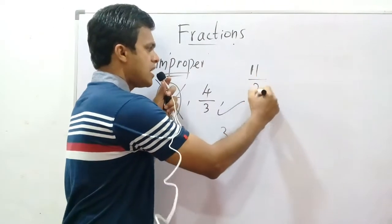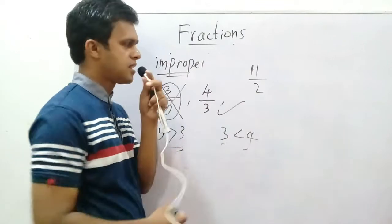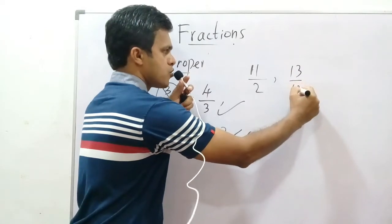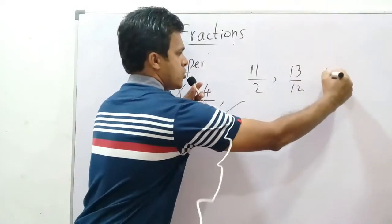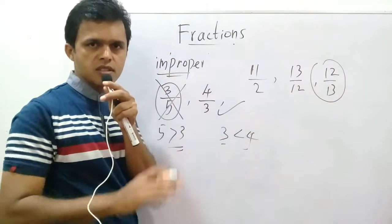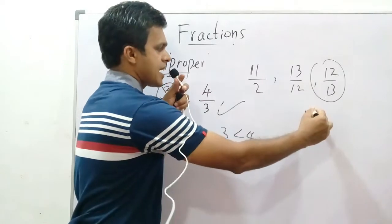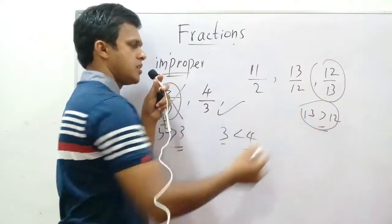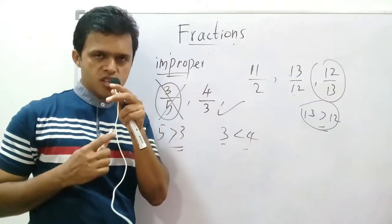How about eleven over two — is that an improper fraction? Yes. How about thirteen over twelve — is that an improper fraction? Yes. How about twelve over thirteen — is that an improper fraction? No. The reason: thirteen is greater than twelve, therefore twelve over thirteen is a proper fraction. But thirteen over twelve is an improper fraction.